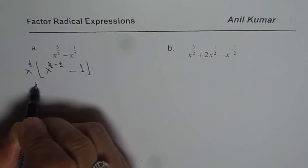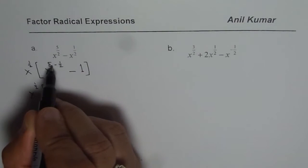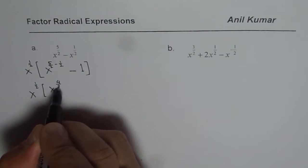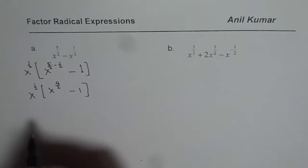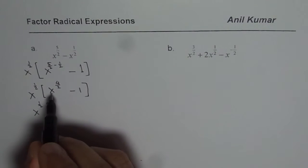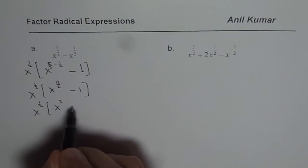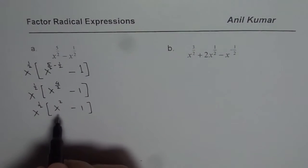Now what is 5 over 2 minus half? 5 minus 1 is 4, so we get 4 over 2 minus 1. So I am breaking up these steps so that things are absolutely clear this time. So that is x squared minus 1. You get the idea? I skipped that step in the last example. Now I hope it is clear.